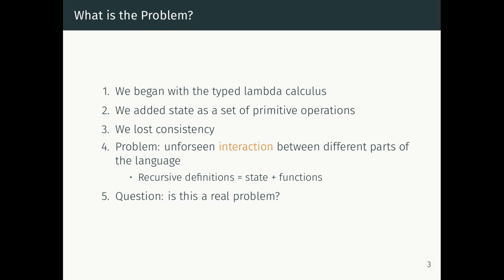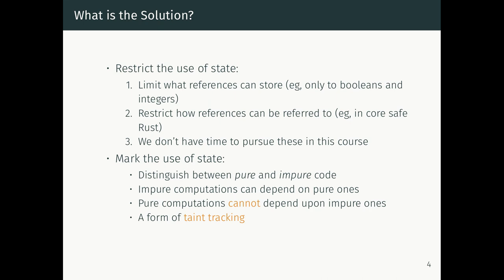We started with the typed lambda calculus — sums, products, implication, perfect propositional logic — then added state as a primitive with the reference type and load/store operations. That seems like a very innocuous addition, but it cost us consistency. The problem was an unforeseen interaction: combining state and higher-order functions let us write arbitrary looping programs.